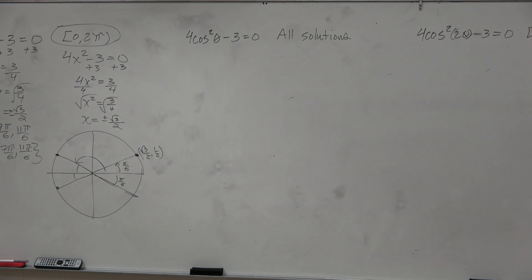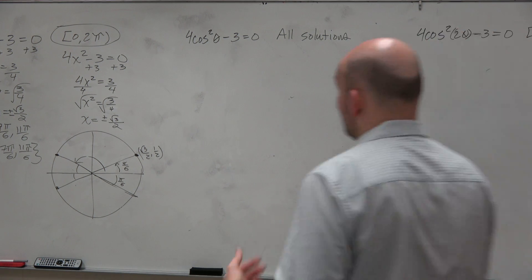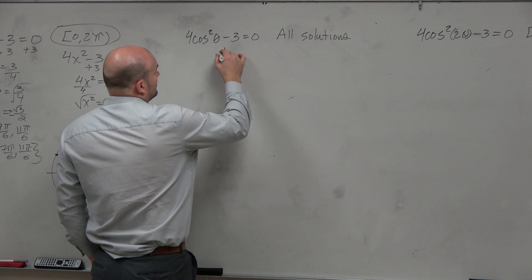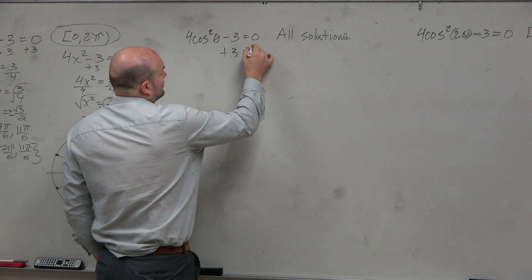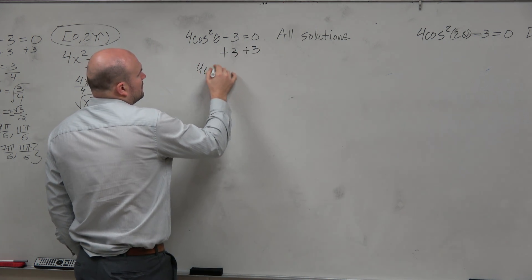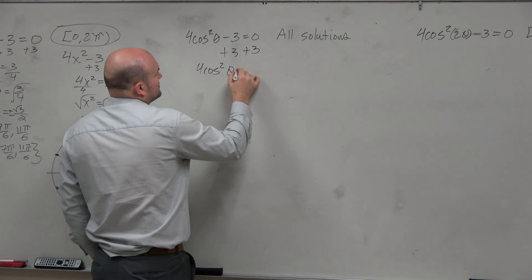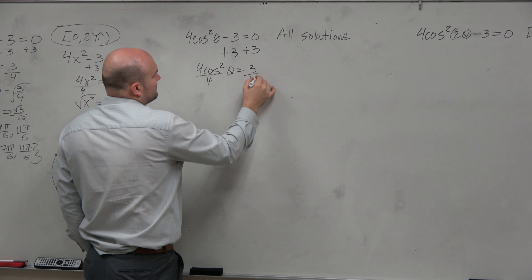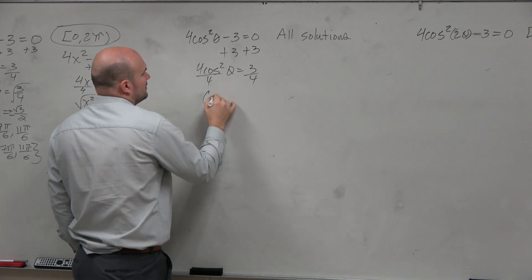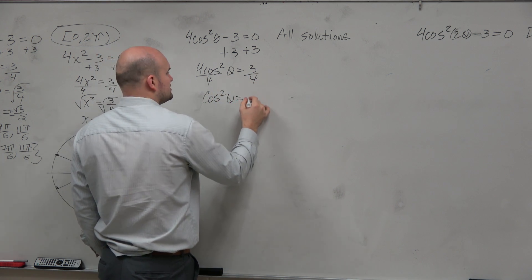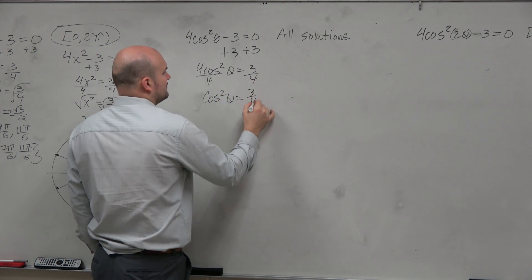We're going to do the exact same thing for all the solutions. Again, the process is very similar. You're going to solve 4 sine cosine squared equals 3, divide both sides by 4, giving you cosine squared of theta equals 3 over 4.